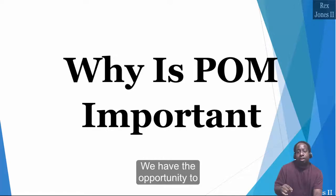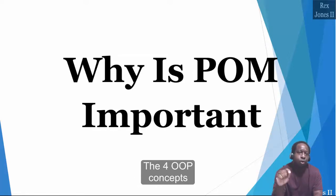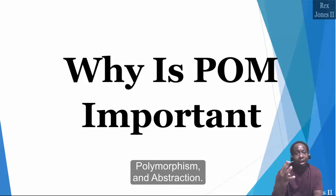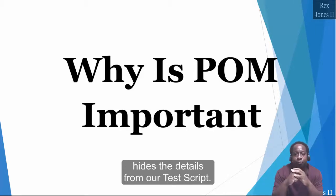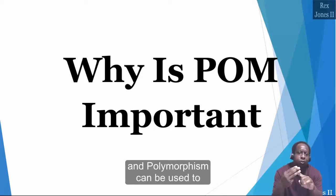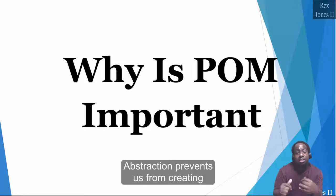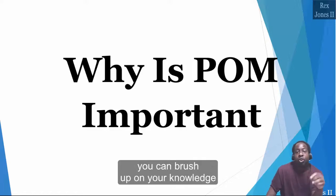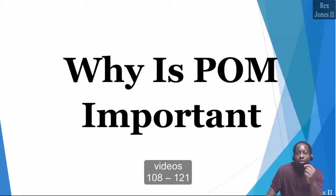We have the opportunity to use all four OOP concepts with page object model. The four OOP concepts are encapsulation, inheritance, polymorphism, and abstraction. Encapsulation hides the details from our test script. Inheritance allows us to extend a class, and polymorphism can be used to override a method. Abstraction prevents us from creating an object from the abstract class. You can brush up on your knowledge of OOP concepts by watching my playlist, which includes videos 108 through 121.